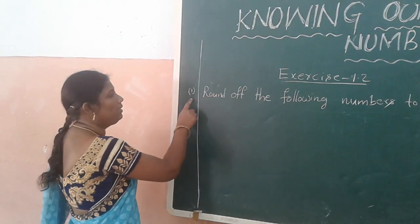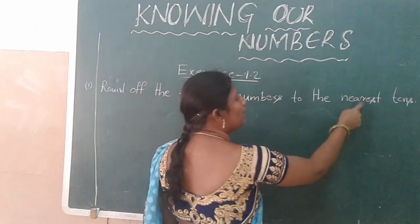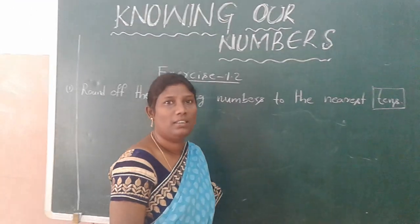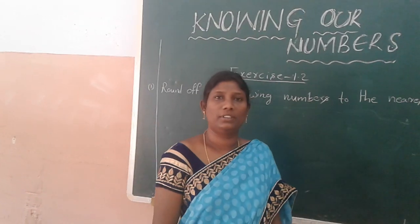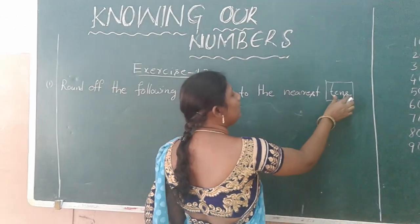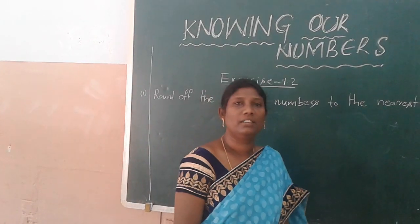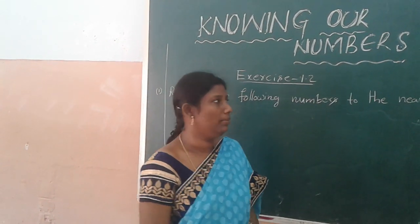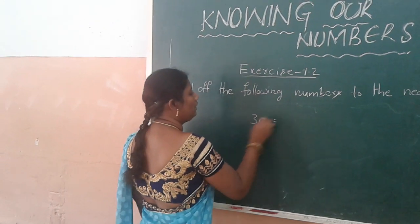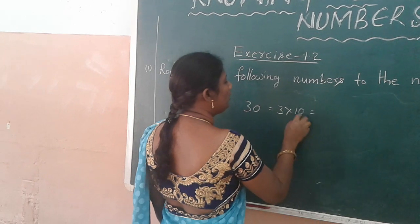Our first sum is: round up the following numbers to the nearest tens. What is the meaning of tens? I am talking about tens place. Tens means a number that is a multiple of 10. For example, take the number 30. 30 means 3 into 10 — this is 3 tens.